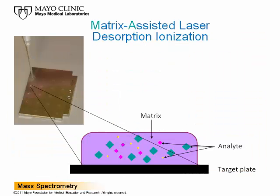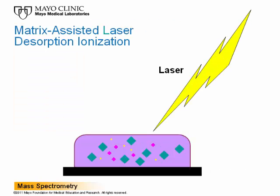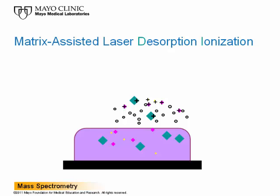The sample is mixed with the matrix and co-crystallized onto the target plate — the matrix-assisted component of matrix-assisted laser desorption ionization. The matrix buffers the sample, preventing its decomposition and enabling transformation of laser light into heat. A laser is applied — the laser component of matrix-assisted laser desorption ionization. The matrix absorbs energy from the laser, releasing it into the sample as heat. This causes the sample to desorb and form singly charged ions — the desorption and ionization component of matrix-assisted laser desorption ionization.